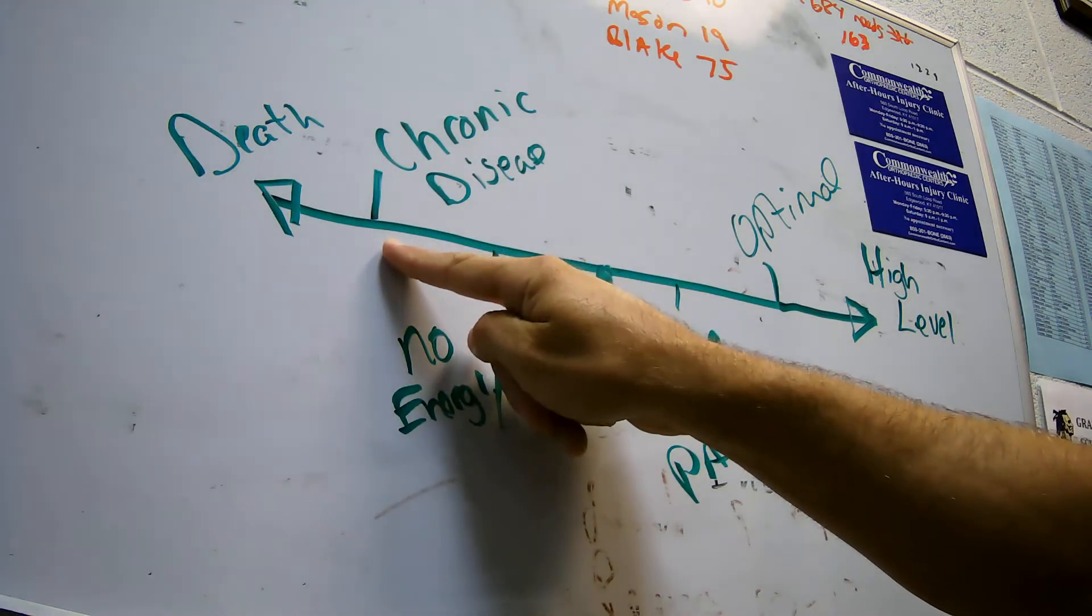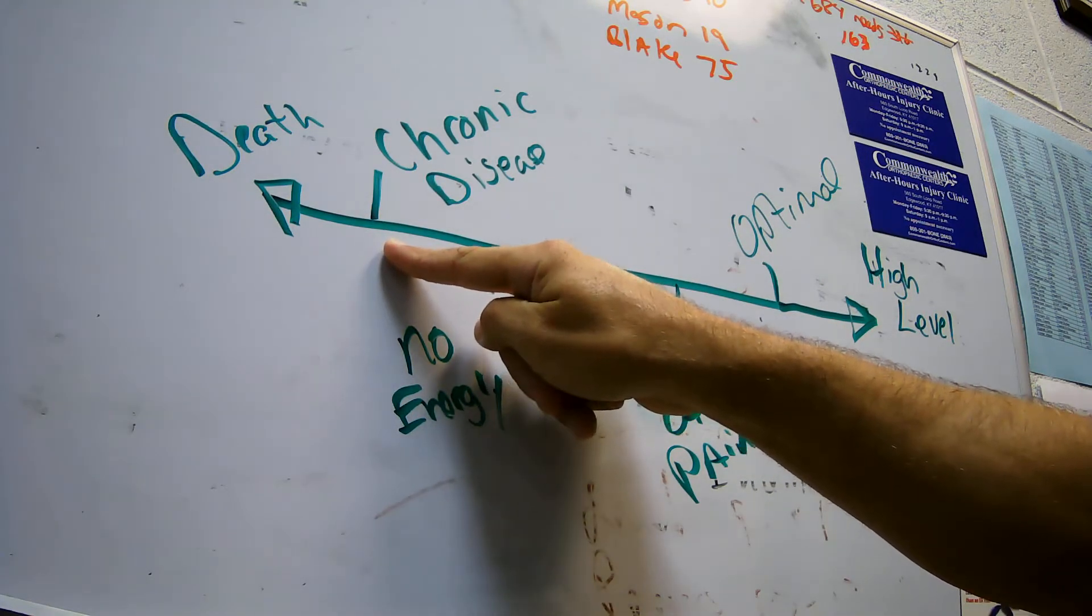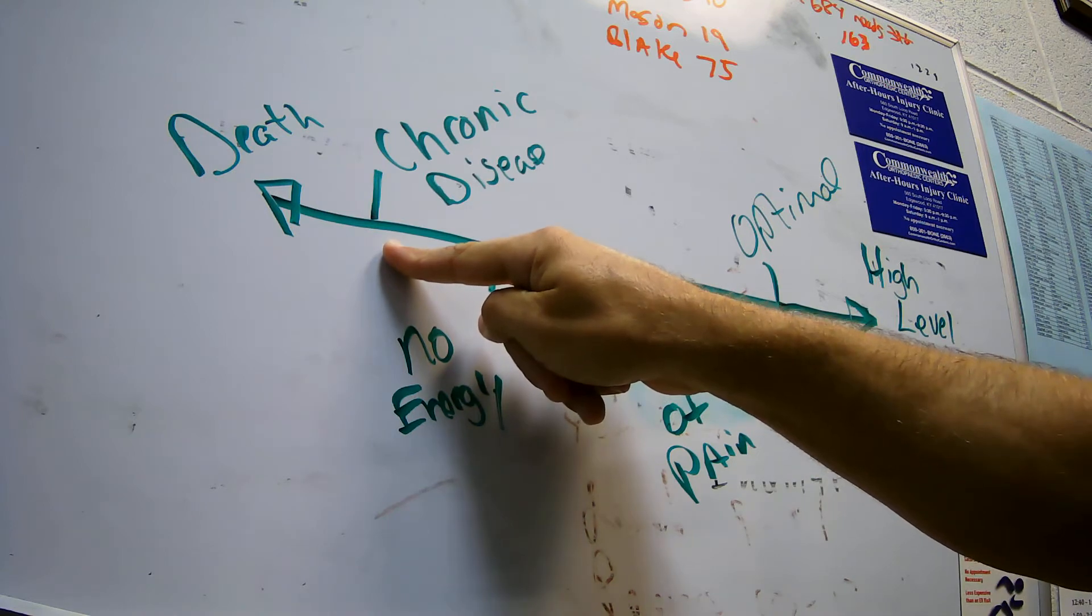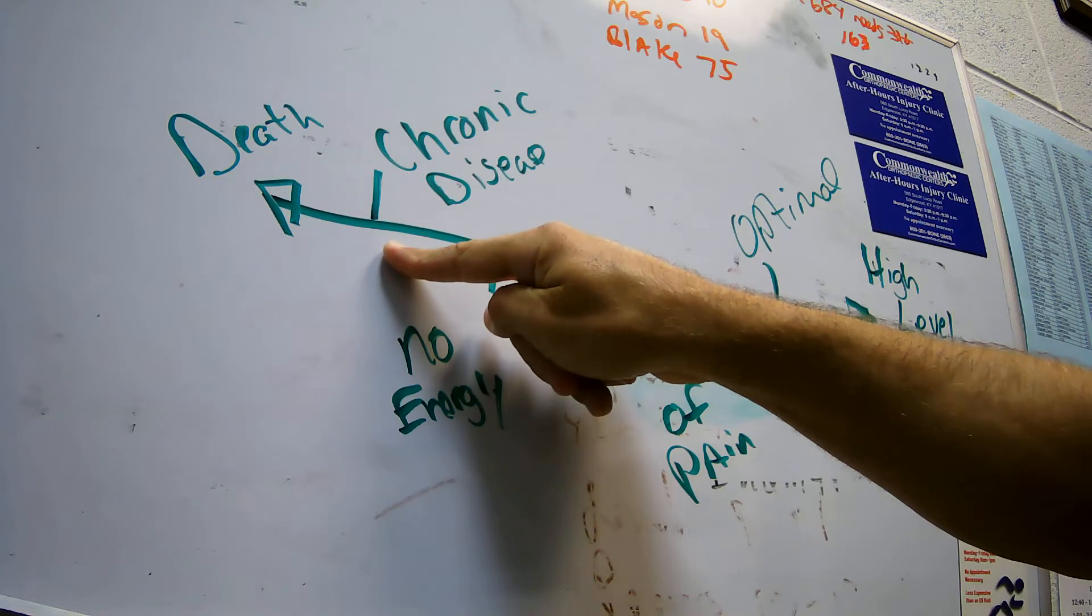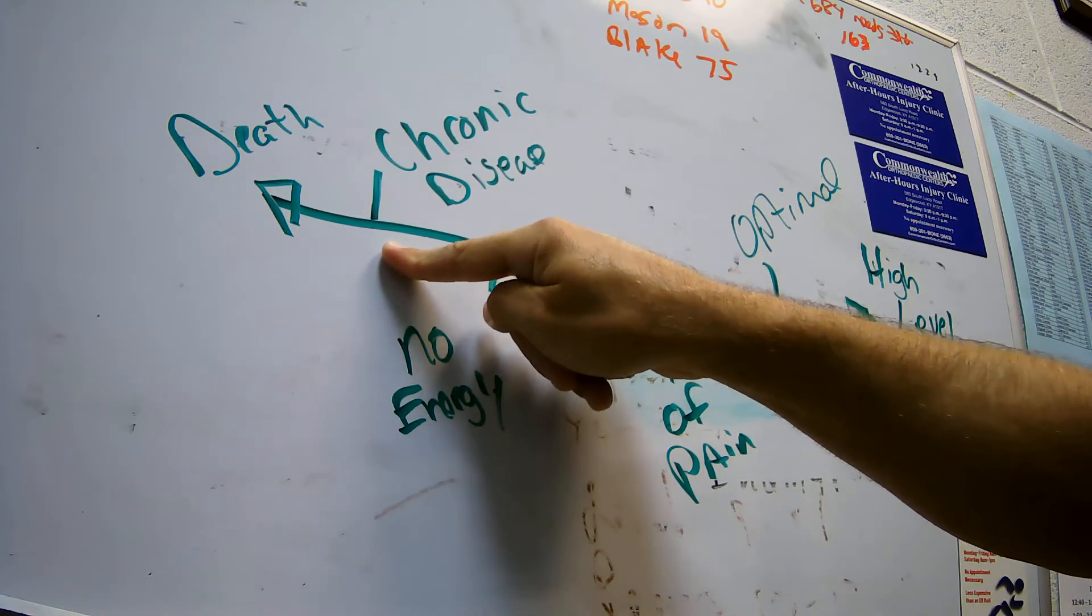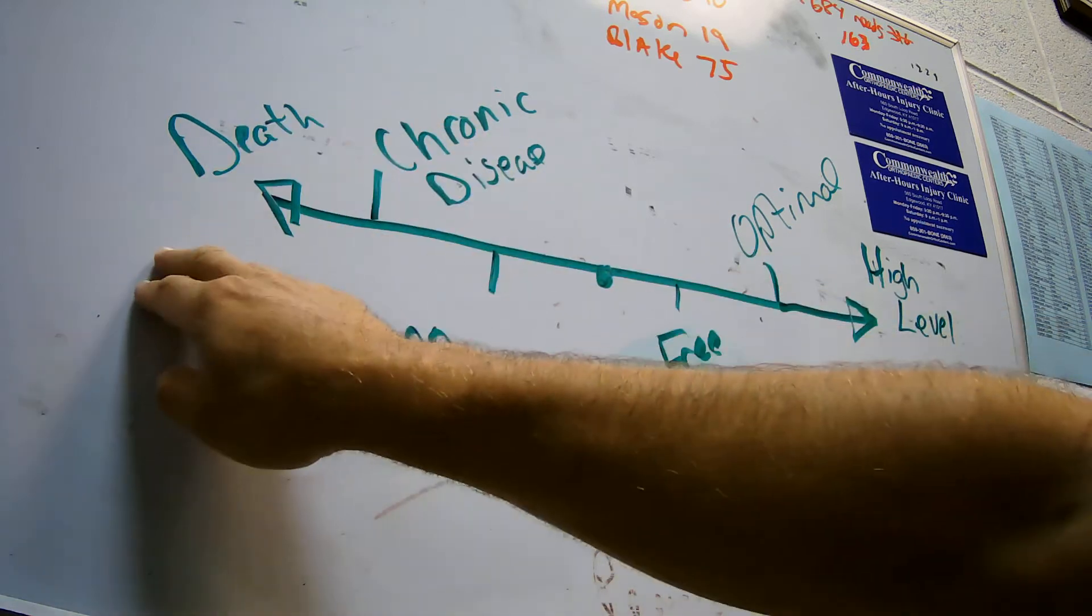After that is chronic disease. These are reoccurring diseases such as HIV, AIDS, cancers, emphysema, COPD. And then after chronic disease is death.